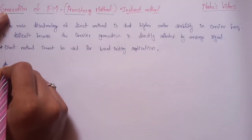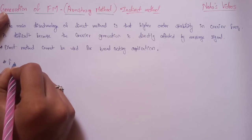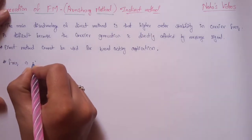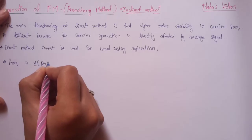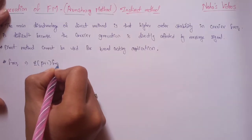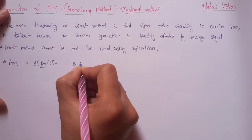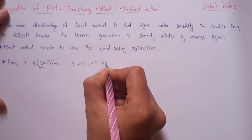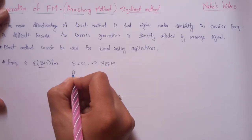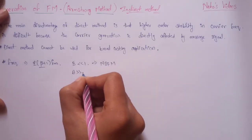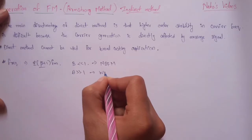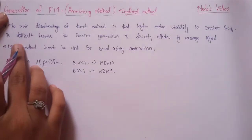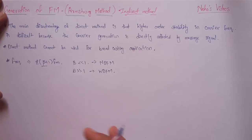The bandwidth of the FM signal is given by 2*(beta + 1)*fm. If beta is very much less than 1, it is called narrow band FM, and if beta is very much greater than 1, it is called wide band FM. To overcome the drawbacks of the direct method, we use the indirect method for FM generation.